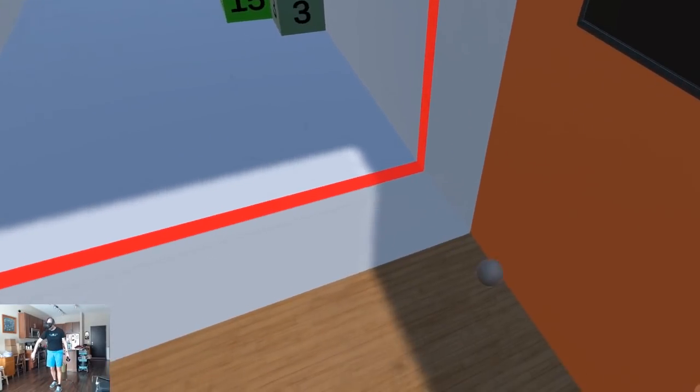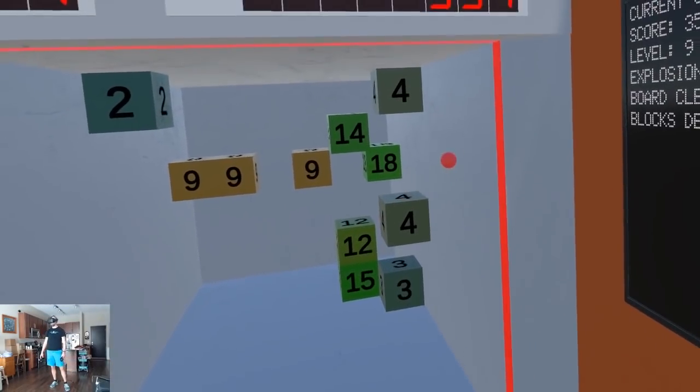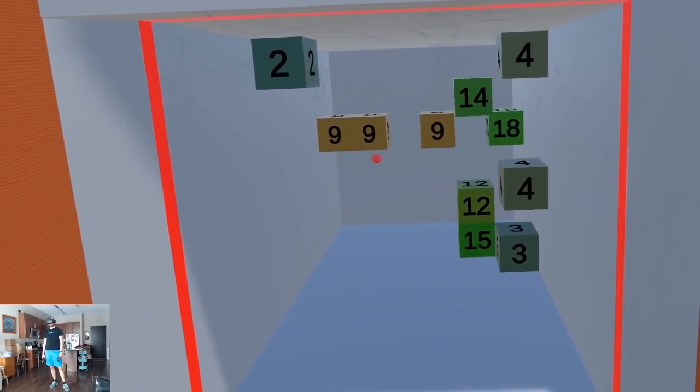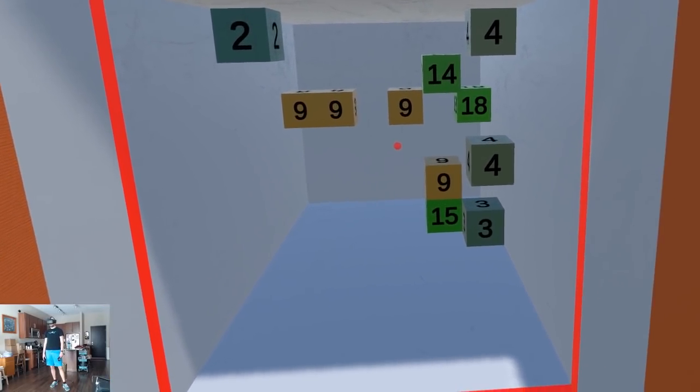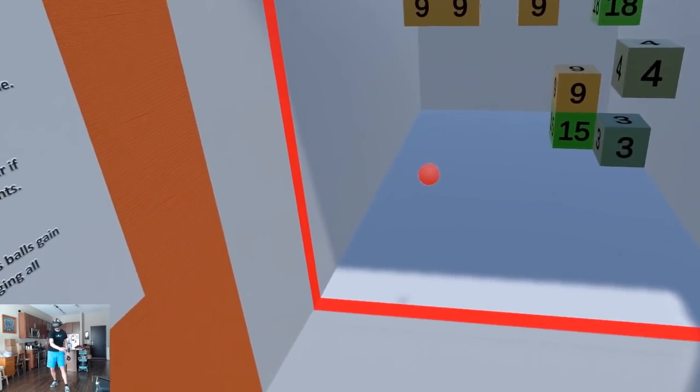When you first fire the balls they're at maximum speed, so keeping them inside the boundaries on your first paddle hit is the trickiest. But with each subsequent bounce, they always move slower and also start glowing red. After so many bounces, they explode.